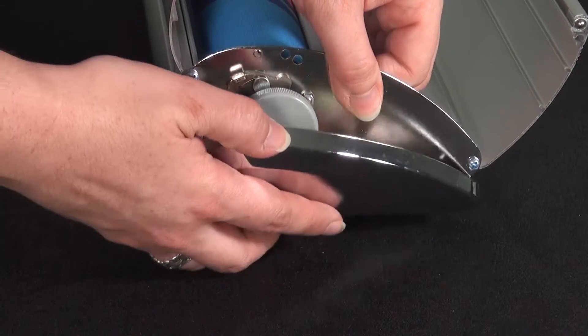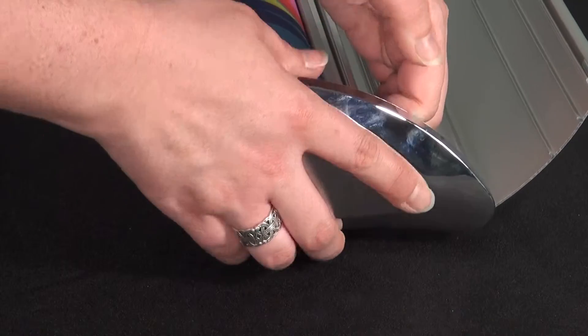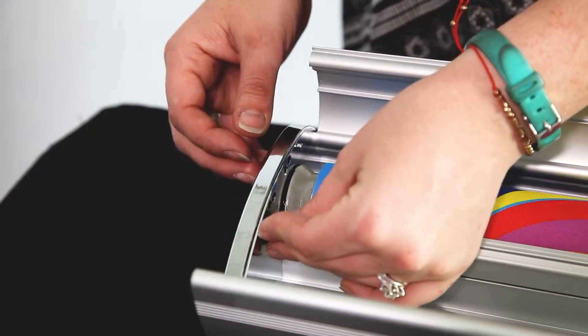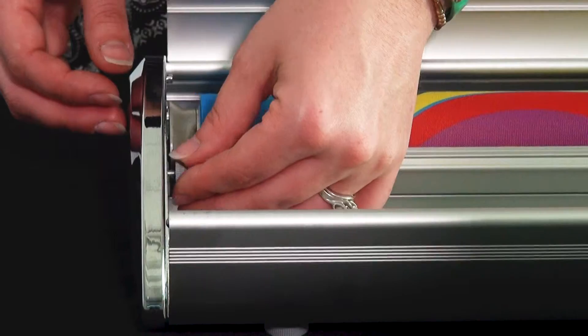With your desired tension replace the silver plate back onto the roll-up. Grab your screw that you set aside earlier and reinsert it. Screw in tightly.